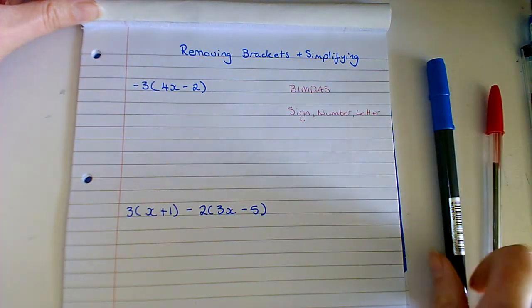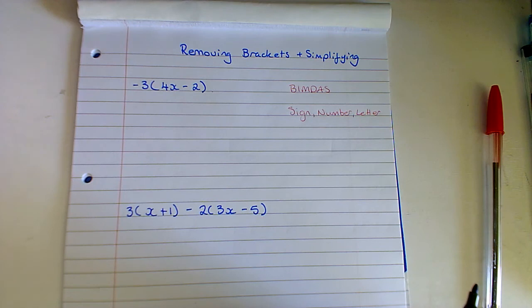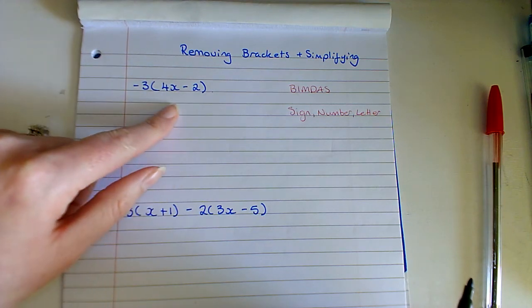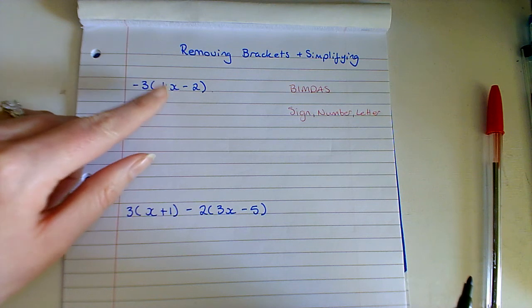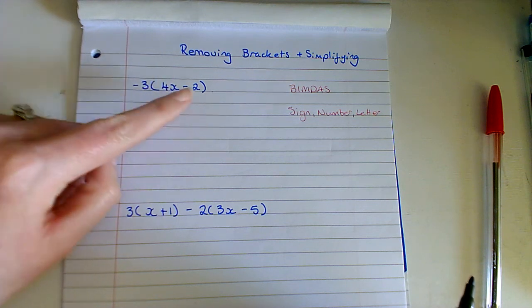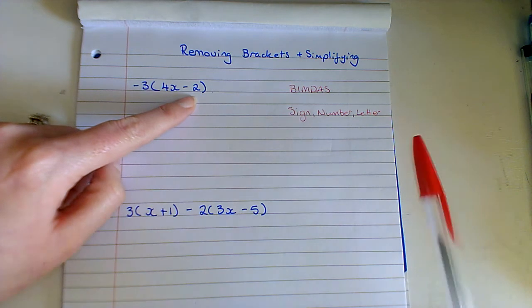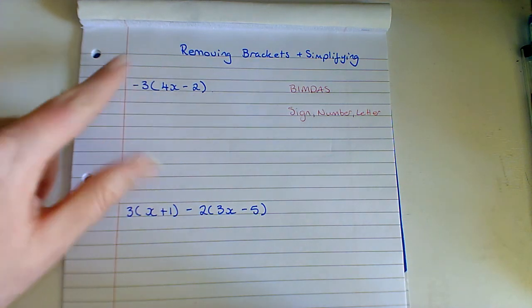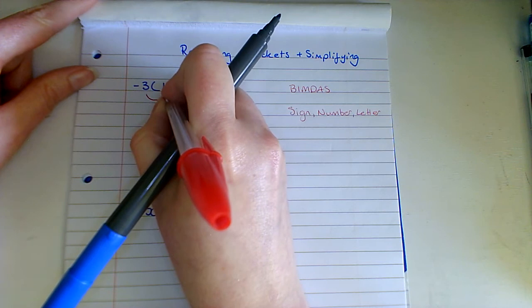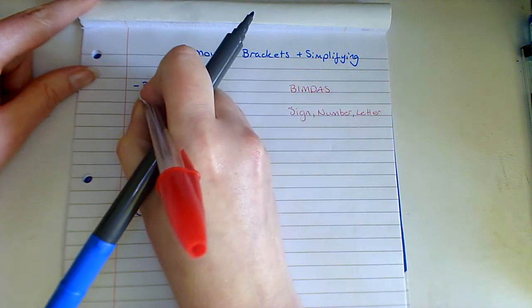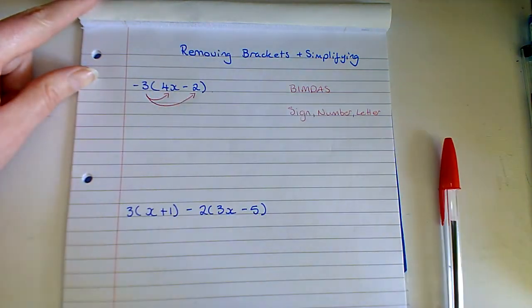And as we go through this I will be referencing back to the two of these. So the first thing is generally speaking when we see brackets we see can we simplify that at all. And we know that we can't here because we have a term with x and then we just have a constant term on its own. So what I'm going to do to simplify and remove this bracket is I'm going to multiply whatever is outside the bracket by whatever is inside the bracket one at a time.